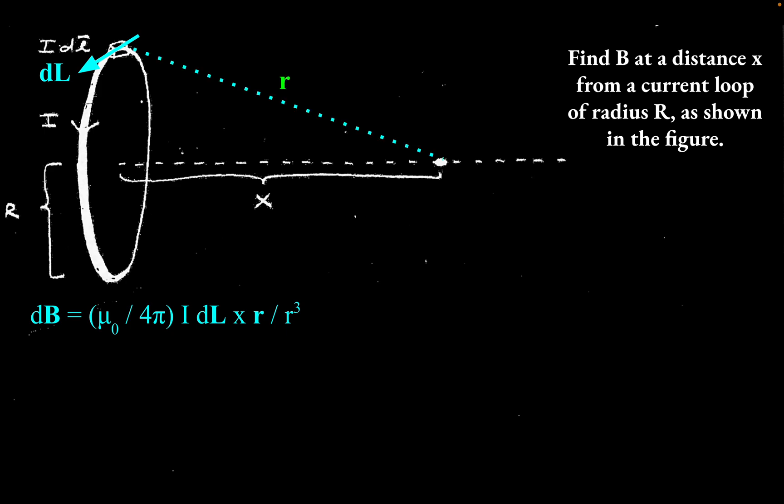DL and R are actually perpendicular here. And then the dB that corresponds with that IDL would point this way. It's actually perpendicular to the R vector and pointing along the direction of DL cross R. So that dB goes with that DL that's at the top of the loop.